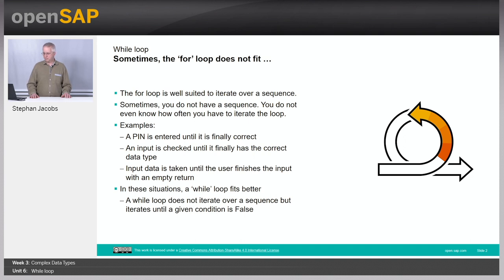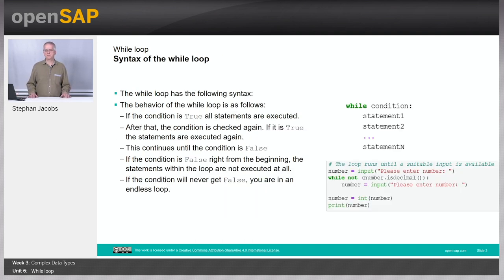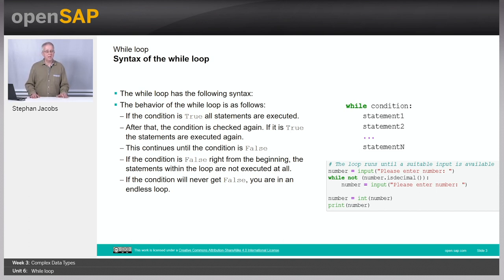In this situation a for loop doesn't fit; a while loop works much better. The syntax starts with the keyword while, then — like in an if statement — we have a condition, something which is either true or false. We have some indented statements forming a while block. If the condition is true, you run through these statements. In contrast to the if statement, you then go back to the while and check the condition again. You repeat this until the condition is finally false, then you continue behind the while block.